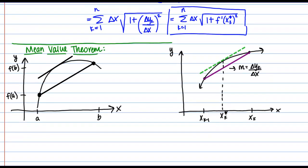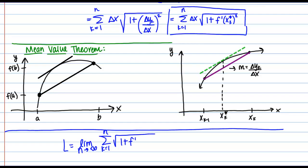So now, finally, we can go ahead and take the limit as n goes to infinity to get the exact arc length. If I do that, I get that the arc length equals the limit as n goes to infinity of the sum from k equals 1 to n of the square root of 1 plus f prime of x_k star squared delta x.